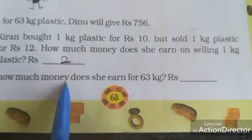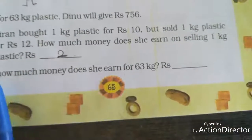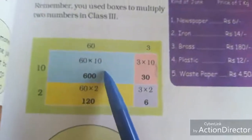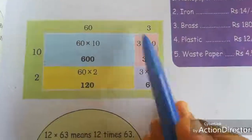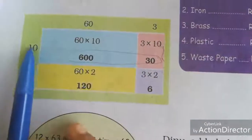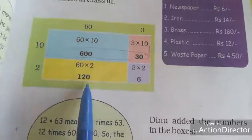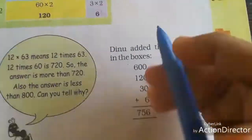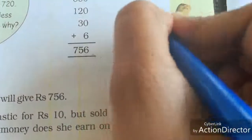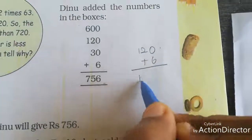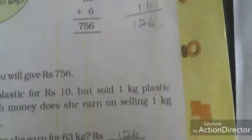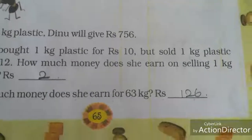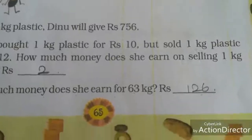How much money does she earn for 63 kg? See here in the multiplication table: 2 into 63. Split: 60 plus 3. 2 sixties are 120. 2 threes are 6. So 120 plus 6 is 126. How much money does she earn for 63 kg? She earned rupees 126.